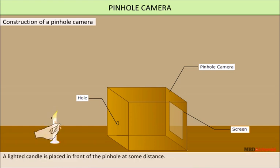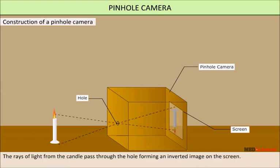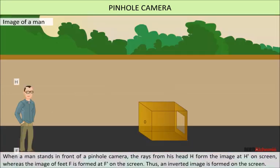A lighted candle is placed in front of a pinhole at some distance. The rays of light from the candle pass through the hole, forming an inverted image on the screen.